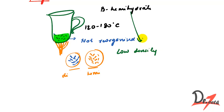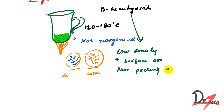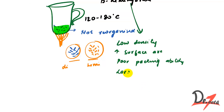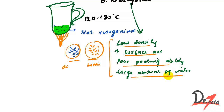These are the features of beta hemihydrate: they have low density, high surface area, poor packing ability, and they need to be mixed with a large amount of water — around 50 ml of water for every 100 grams of powder.